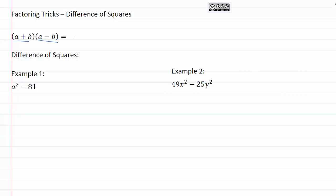We'll use our FOIL method. We'll end up with a squared, and the outside terms together will give us minus ab, the inside terms would be plus ab, and then our last terms, plus b times minus b, would give us minus b squared. We can see that these two middle terms drop out right here.